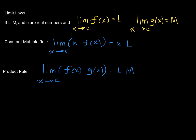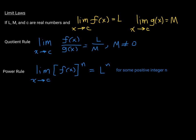The constant multiple rule says that if you're evaluating the limit of a function times a constant, that's equivalent to the constant times the limit of the function — you can pull k out in front of the limit, and it equals k times the limit of f(x). The product rule: the limit of the product of two functions equals the product of the limits — the limit of f(x)·g(x) equals the limit of f(x) times the limit of g(x).